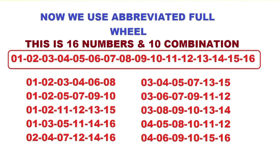The arrangements are: 1 2 3 4 6 8, 1 2 5 7 9 10, 1 2 11 12 13 15, 1 3 5 11 14 16, 2 4 7 12 14 16, and 4 6 9 10 15 16. Now we will apply this — for example, when you have selected your combination, you can use this for your selection and generate your 10 combinations.